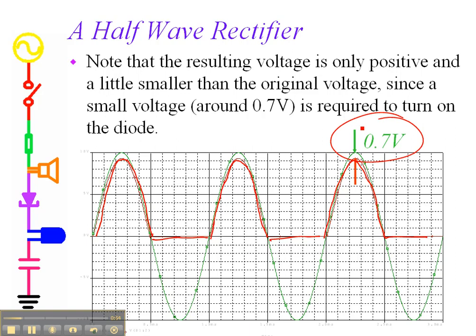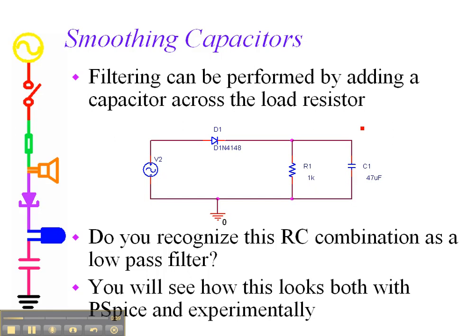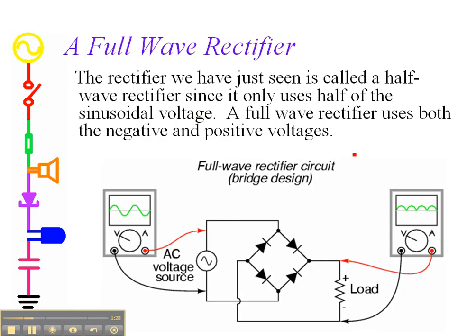If we filter this by adding a capacitor, we're always going to have current flowing in one direction, which is always going to give us a positive voltage. That positive voltage will charge up the capacitor — this is actually a low-pass filter. If we add this capacitor and it begins to charge up, it eventually produces something that's DC-like. It isn't really quite DC because it has something called a ripple on top of the DC value.